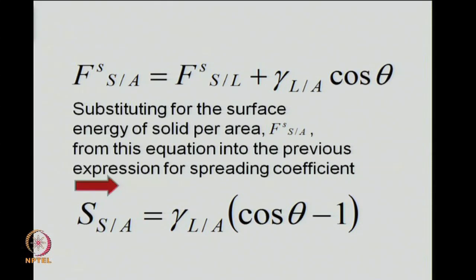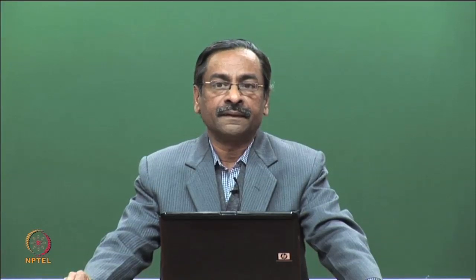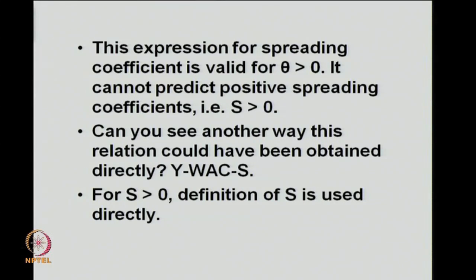Please remember that this is for a non-spreading system, in which the liquid is able to maintain a drop whose form and shape will attain the equilibrium contour. Here is a way we can estimate the negative spreading coefficient, provided we know the surface tension of the liquid and the contact angle. We do not need the properties otherwise directly dependent on the solid energies.